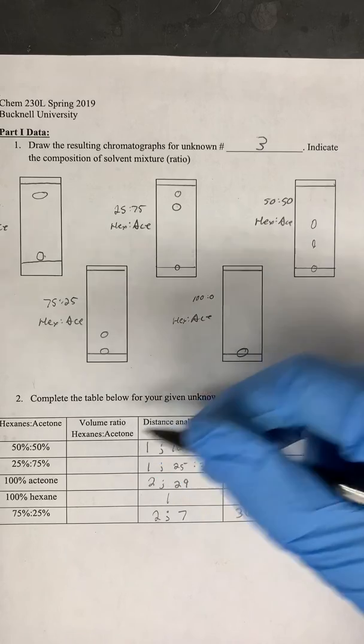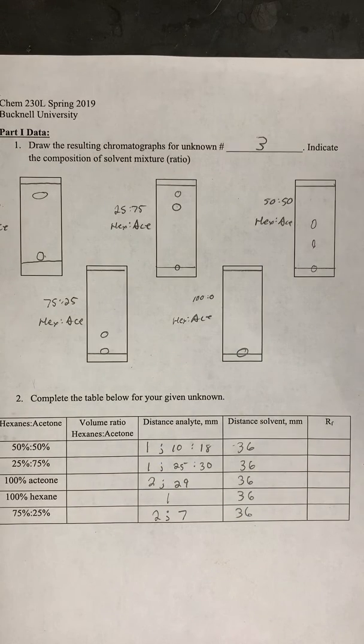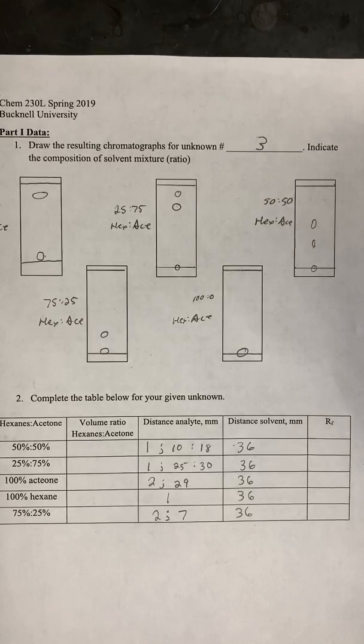And also you need to fill in the volume ratio for each of the runs to determine how much volume of each solvent you'd be adding from your micropipettor to make that solvent ratio, keeping in mind that the total volume in the solvent chamber for the five different vials was 0.5 milliliters.